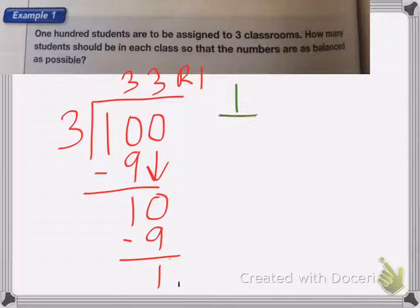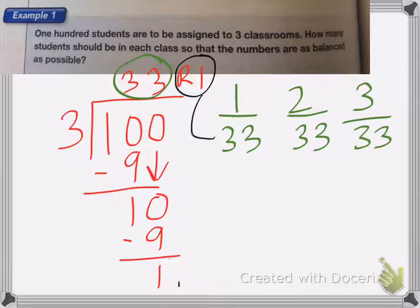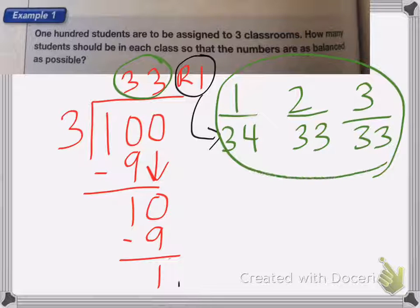So I'm going to draw out my three classrooms, one, two and three. Well I know that I can put 33 in each class. But I still have that one student left over and he needs to go to a classroom too. So I'm going to put that one student into one of my classes. So instead of having 33 in classroom one, I will have 34 in classroom one. And this is your answer, all these three numbers, to show that this is as balanced as possible.